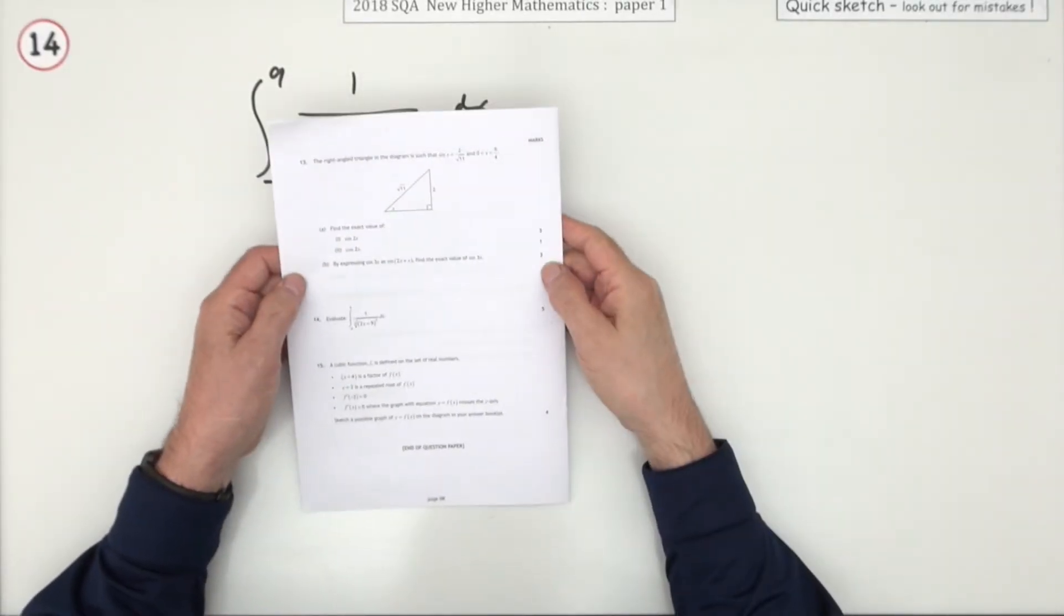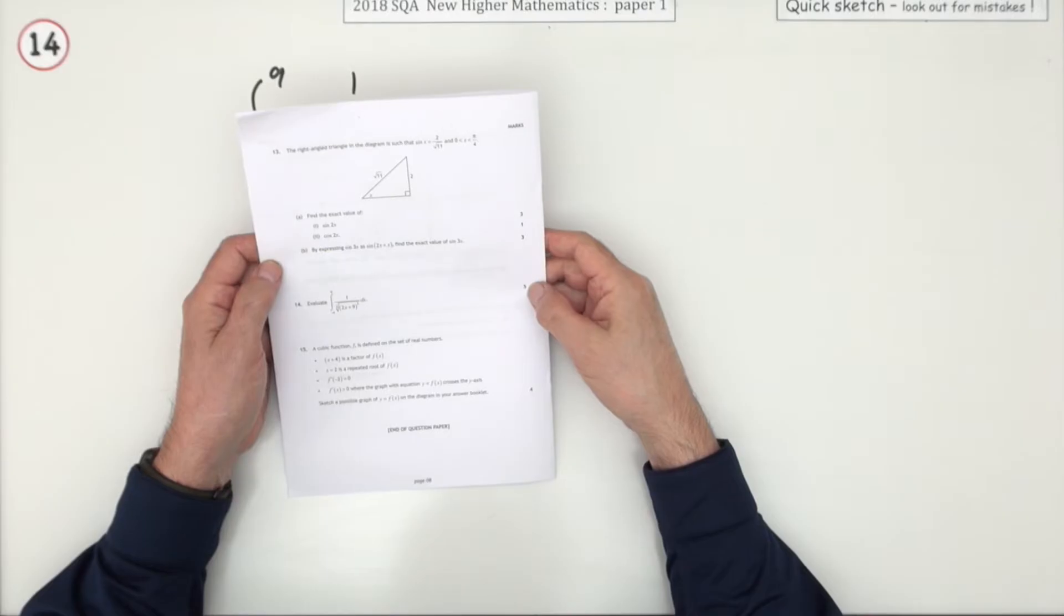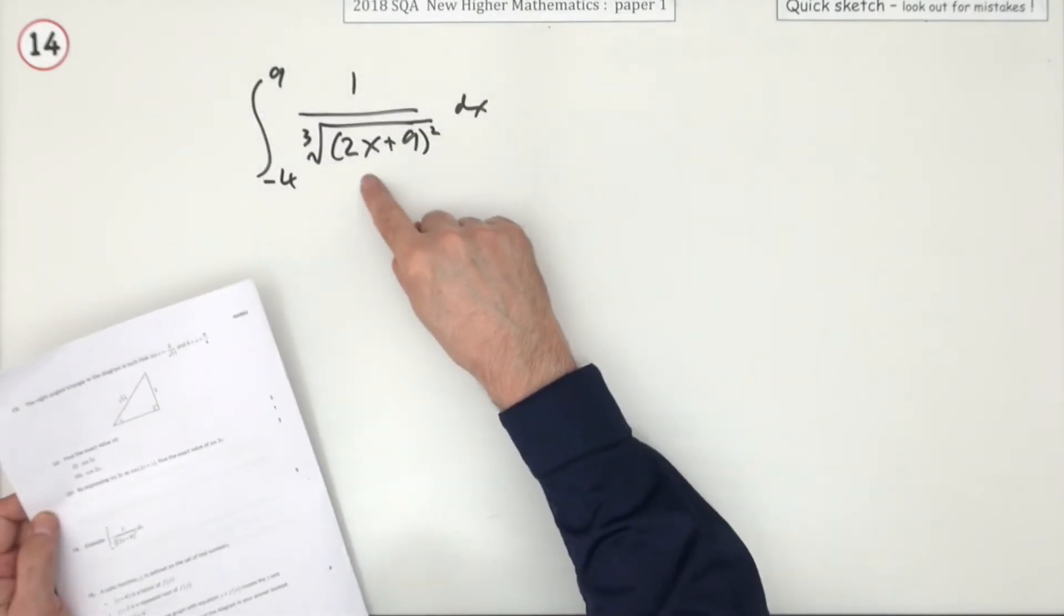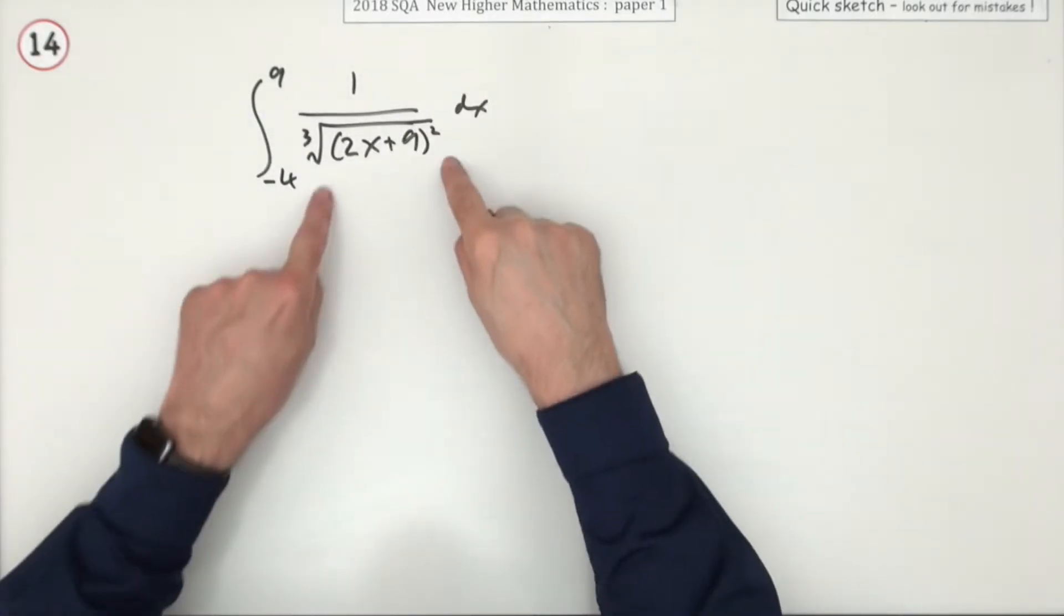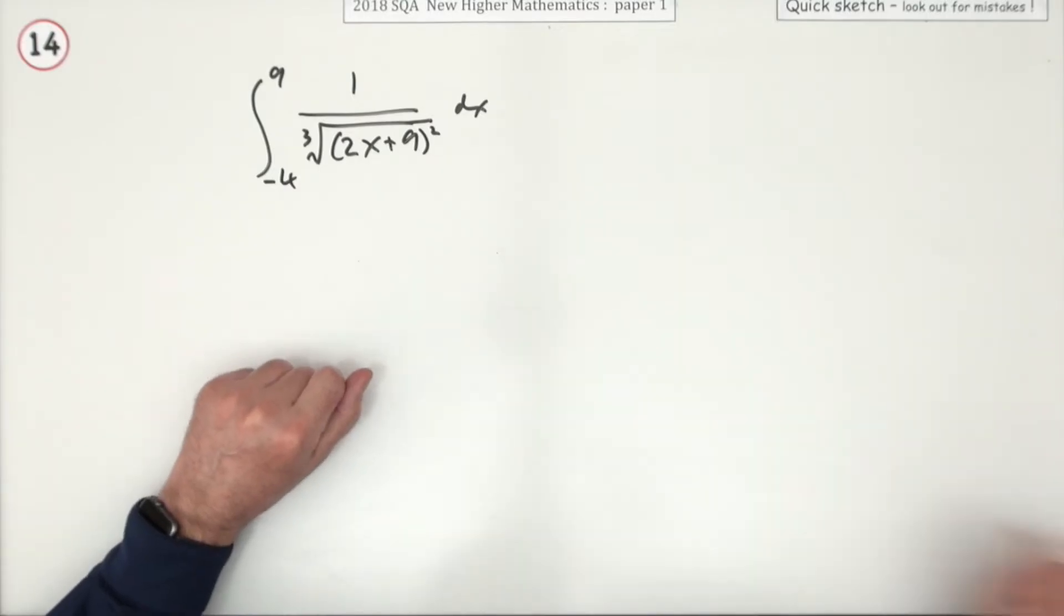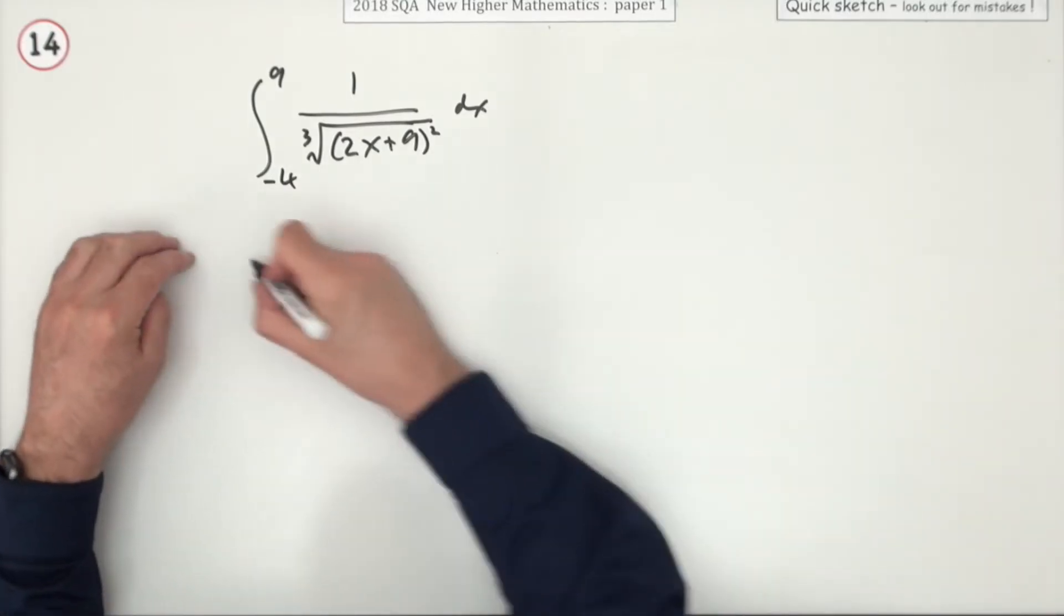Number 14 from paper 1 of the 2018 New Higher Maths, five marks here for evaluating this definite integral. Notice it's got a wee function of a function in here. Just write that out carefully.